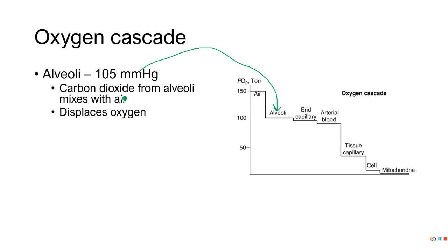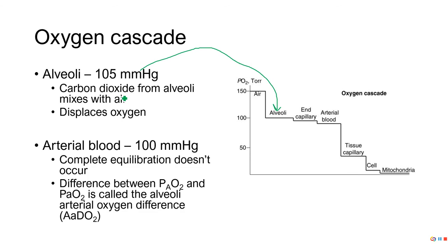But then we go to the arterial blood, and this is a little bit lower than the alveoli. This is different from what we talked about in human phys. Notice that line is a little bit lower than that line. This is because we're never completely equilibrated. We have alveolar oxygen, which is the big A, and arterial oxygen, which is the little a, and they're a little bit different. That's really what the next lecture is all about.